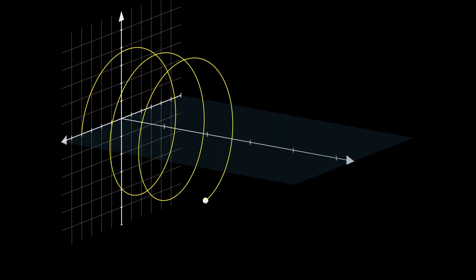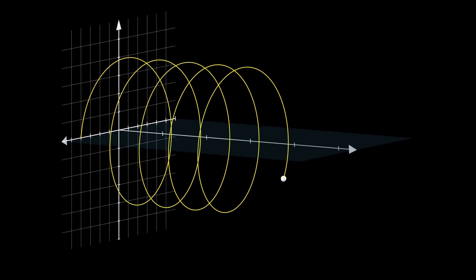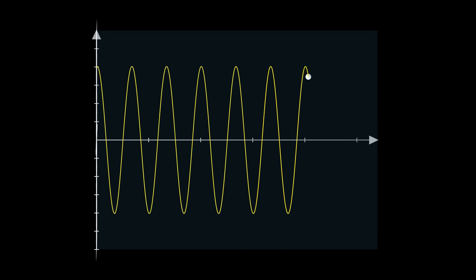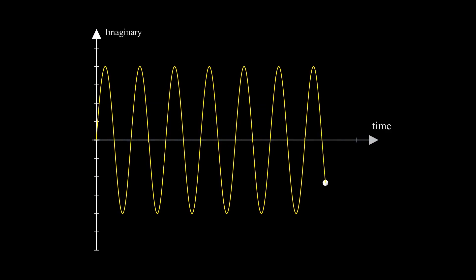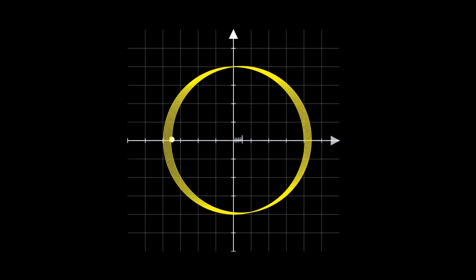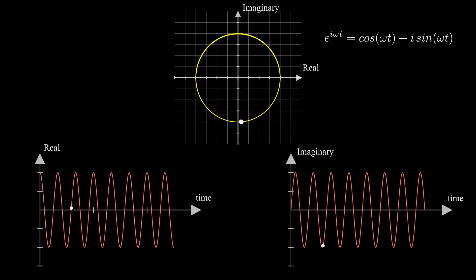This can be visualized more clearly in 3D by adding the time axis. If we look at only the real part of the signal with respect to time, we notice that it is a cosine signal. If we look at the imaginary axis versus time, we clearly see a sine wave. We know that from Euler's formula — any complex exponential is composed of cosine as the real part and sine as the imaginary part.